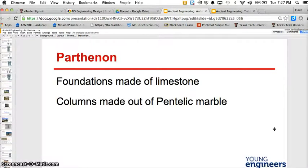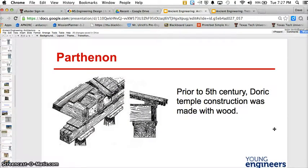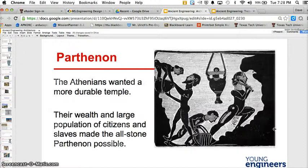The foundation made of limestone, columns made out of marble. Prior to the 5th century, Doric temple construction was made with wood. The Athenians wanted a more durable temple. Their wealth and large population of citizens and slaves made the all stone Parthenon possible.